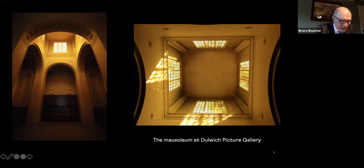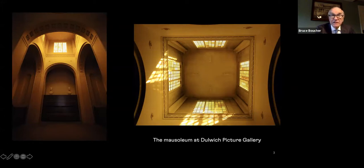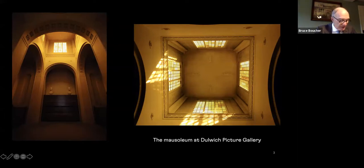Coming to the Dulwich Picture Gallery, I was unprepared for the mausoleum, which is set in the middle of the building. As many of you know, you go down three steps into a chamber where you encounter the sarcophagi of the founders of the gallery. You experience an immediate change of atmosphere, which is created by the yellow glass of the lantern. Soane here seems to anticipate the work of a light sculptor like James Turrell, and one finds similar effects in number 13, Lincoln's Inn Fields.